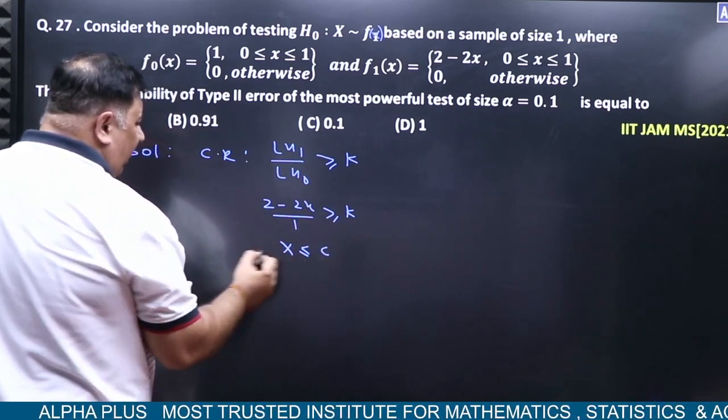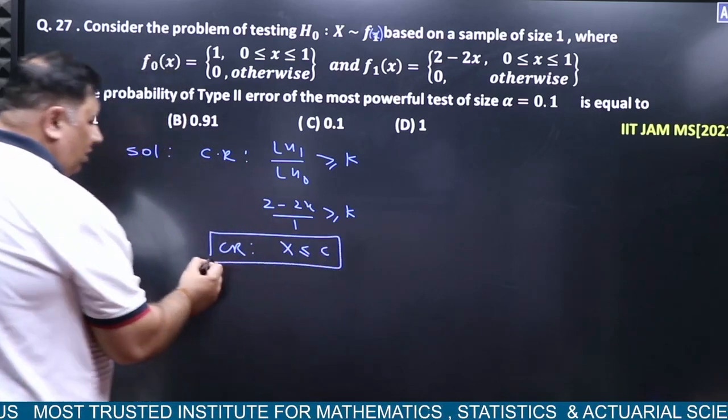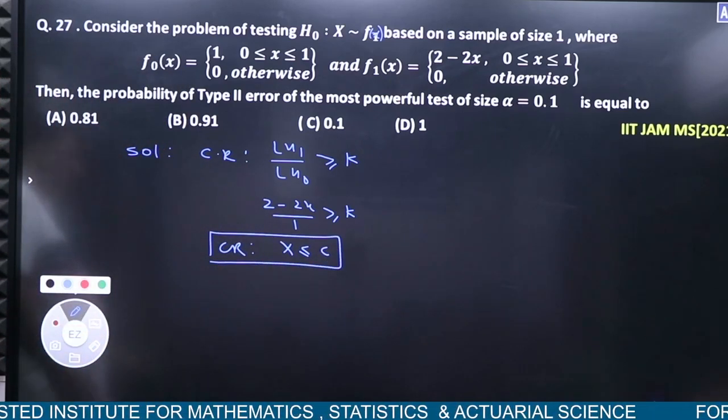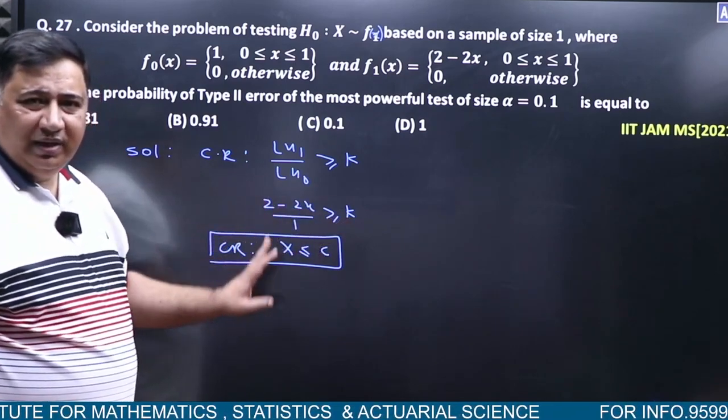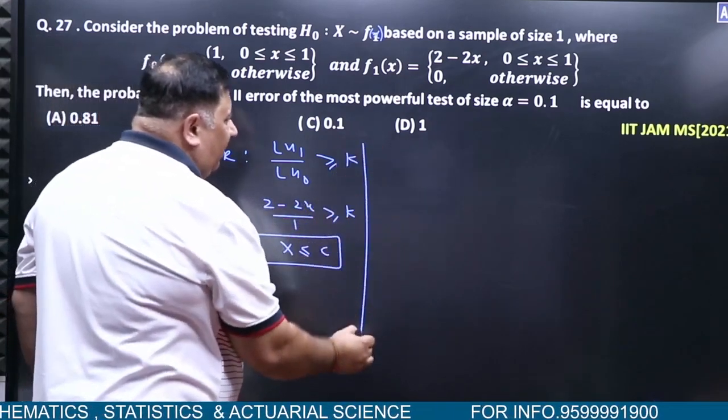So the critical region will be x less than equal to c. When you move 2x to the other side, x less than equal to c, whatever value it will be. Now alpha is given as what?